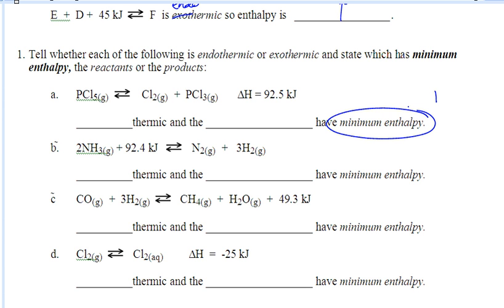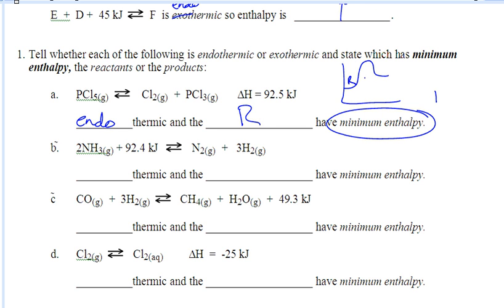You'll see where I'm going with this in a minute. Here's my example — delta H is positive, we know it's endothermic. If it's endothermic, the reactants are going to have the minimum enthalpy. If I draw this graph out, the reactants are here and the products are up here. The reactants have the lowest energy, so the reactants have the minimum enthalpy. In B, it's also endothermic, so the reactants are going to have the minimum enthalpy.